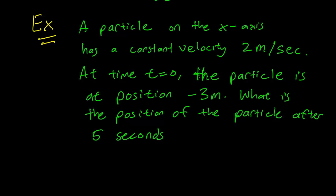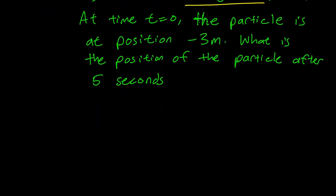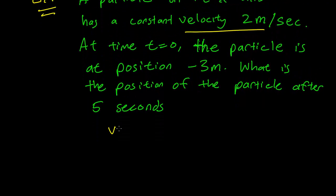To solve this problem, we start with the information we are given. We know that we have a particle that has a constant velocity of 2 meters per second. This means that v, the velocity, which is equal to dp/dt, is equal to just 2.